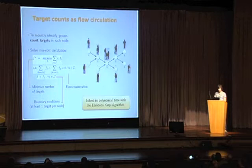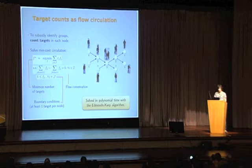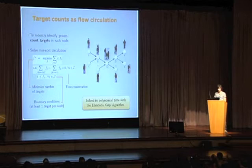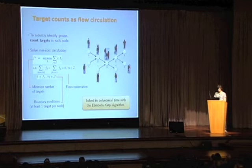In order to identify groups, we propose to first count the targets in each node, using a method based on flow circulation where each unit of flow represents one target. The optimization tries to explain the data by minimizing the number of targets, as shown in the first equation. It also enforces at least one target per node as a boundary condition. The counts are mostly obtained from the flow conservation equations, meaning that two separate targets entering a node must also exit. These constraints are readily solved with the Edmonds-Karp algorithm.